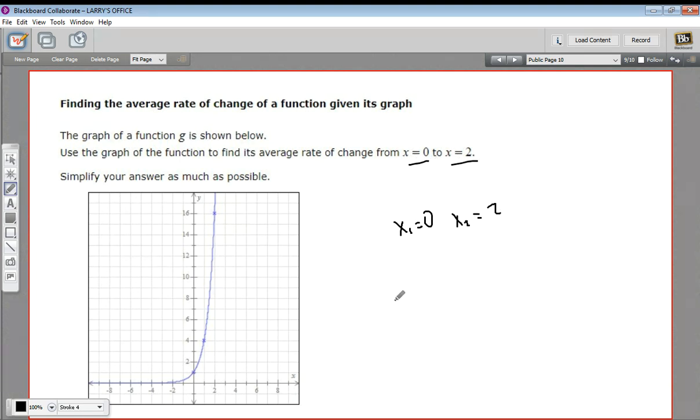We're going to put the rise over the run from those two points on this function. The rise are the y values or the function values. So you'd have g(x₂) minus g(x₁), the difference between the function values. And on the bottom, you'd have x₂ minus x₁ or the run, the difference in the x values.